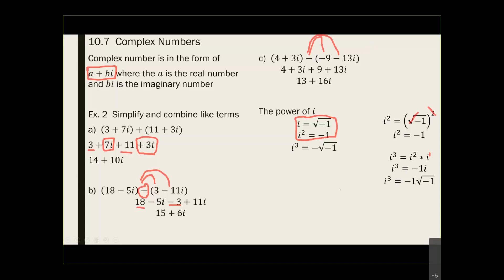Lastly, i to the 4 is equal to 1. Why 1? Because i to the 4 is the same as i squared times i squared. So what is i squared times i squared? i squared is negative 1, so negative 1 times negative 1 equals 1.